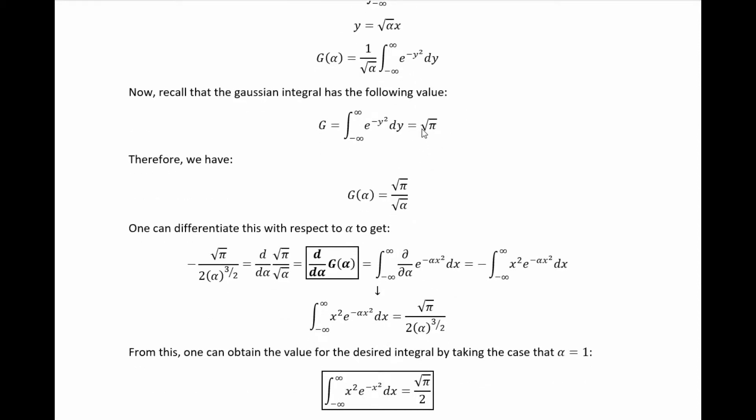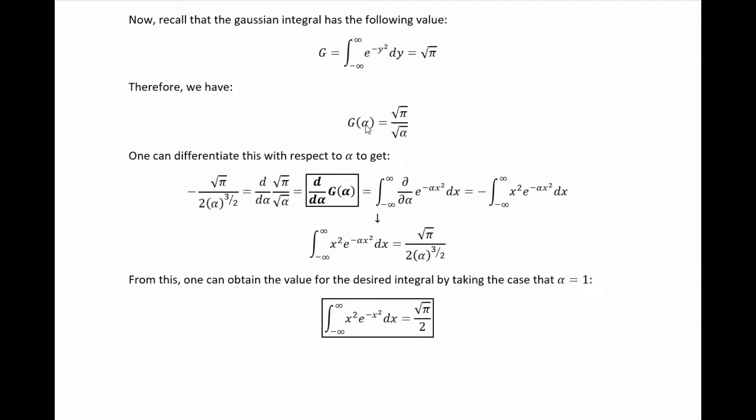which we of course know is just equal to root pi, so inserting that tells us that this alpha parameterized version, which I've denoted g of alpha, is just equal to root pi over root alpha.